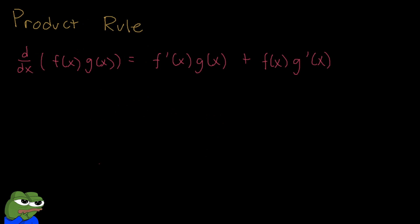Now we move on to something a little more challenging, which is the product rule. As the name implies, we use it when two functions are multiplied with each other. We're multiplying f of x and g of x together, and the derivative of this is simply the derivative of the first function multiplied by the second original function, plus the first original function multiplied by the derivative of the second function. That's quite a lot, so let's try an example.